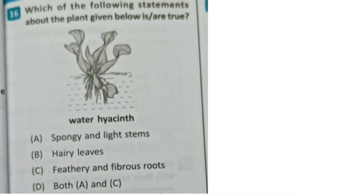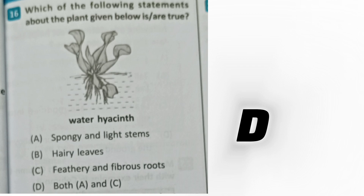Next question: Which of the following statements about the plant shown is true? Options: spongy and light stem; hairy leaves; feathery and fibrous roots; both A and C. The correct answer is D - both A and C.